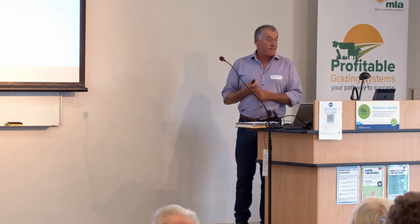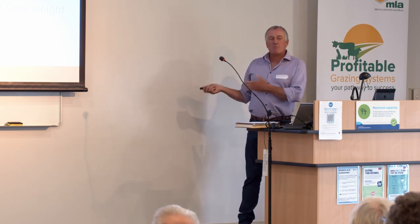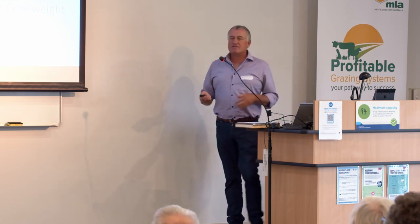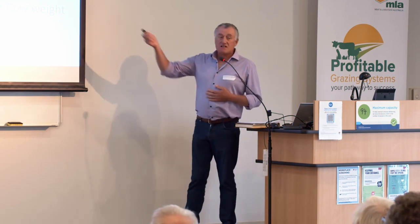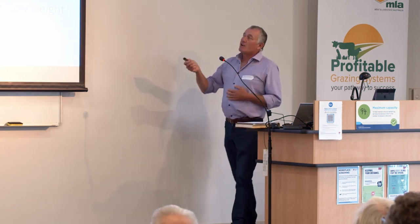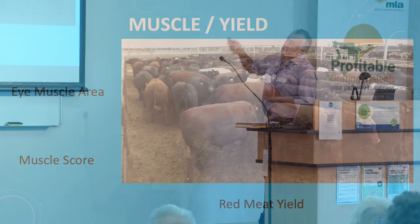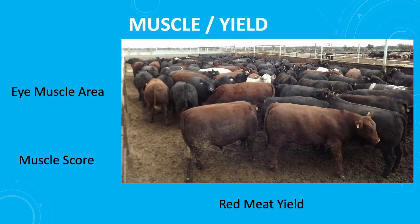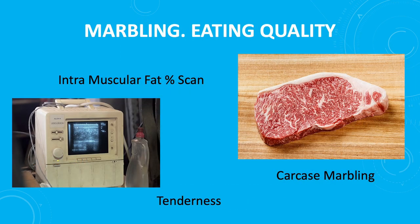My suggestion is that seedstock producers have been doing quite well over the last couple of years, so the argument about not being able to afford to is starting to slip away. If it's a big profit driver for commercial producers, that argument doesn't hold. We also measure muscle and yield, obviously in lots of different forms, and go on to the meat quality stuff that we know is so important — finding those places as a seedstock producer where you can identify superior animals so you provide a better product for your clients.